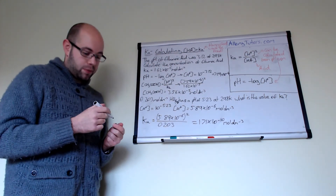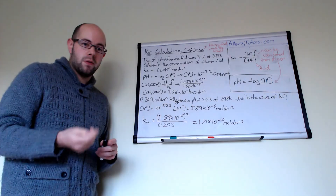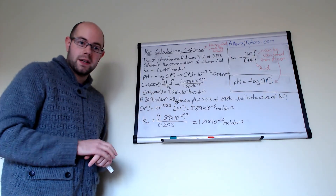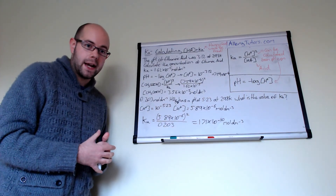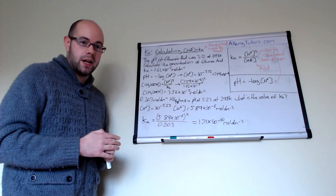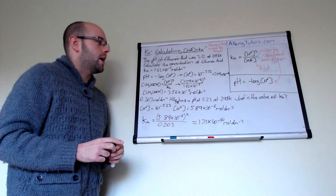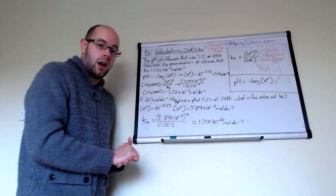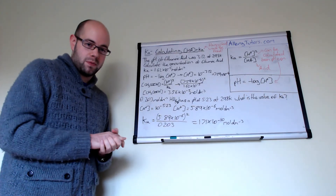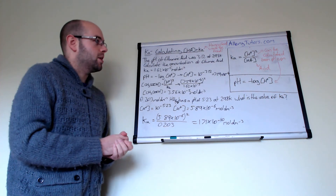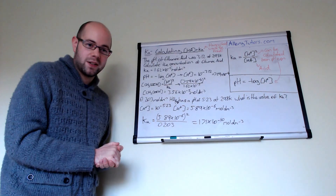Those are two straightforward examples of how you can use the Ka expression to calculate the concentration of a weak acid or to work out Ka itself. There is another step where you can work out something called pKa — there's a video on that, just click the link below. The values of Ka are quite large, and pKa makes that more simplified, giving a number that's easier to work with. Keep practising — bye!